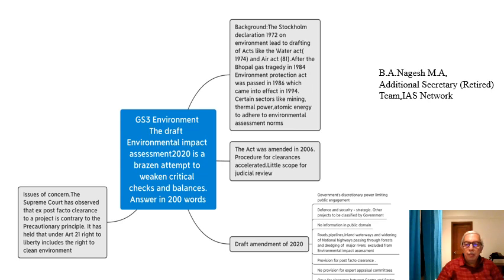For the introduction, we mention the Stockholm Declaration 1972 on environment, which led to drafting of important acts like the Water Act of 1974 and the Air Act of 1981. After the Bhopal gas tragedy in 1984, the Environment Protection Act was passed in 1986, which came into effect in 1994. As a result, certain sectors like mining, thermal power, and atomic energy had to adhere to environmental assessment norms.